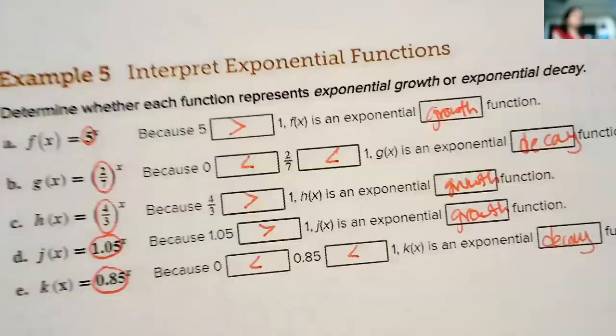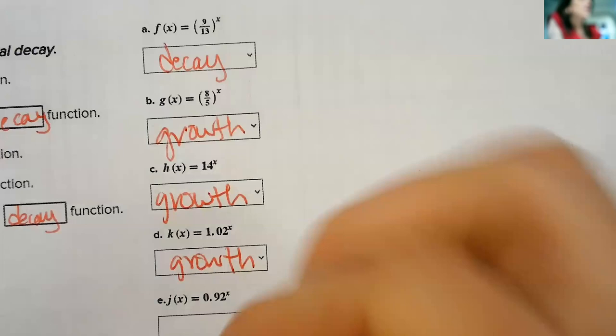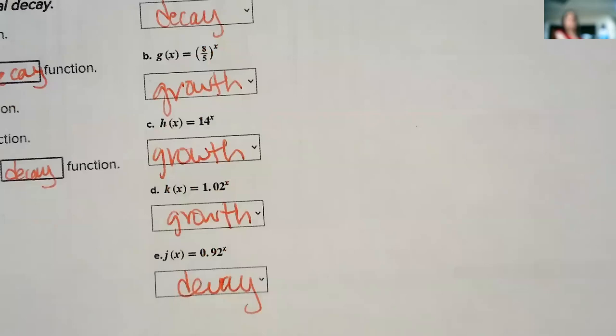More practice on this without the hints here where they write it out in words. Look at this one. Growth or decay. The fraction is less than 1, so that one is decay. 8 over 5, that's growth. That is greater than 1. 14 is growth. 1.02 is greater than 1, that's growth. And 0.92 is less than 1, that is decay.